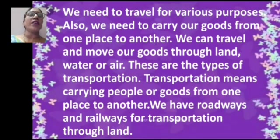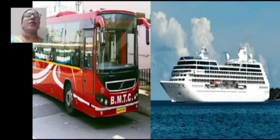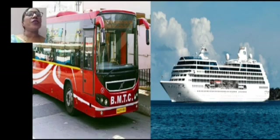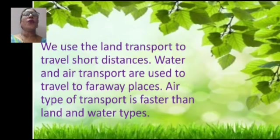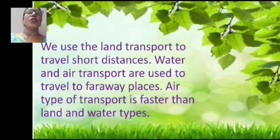We have roadways and railways for transportation through land. A bus is used for travelling in a city or going from one place to another. A ship is used for long distances. We use land transport to travel short distances. Water and air transport are used to travel to far away places. Air transport is faster than land and water types.